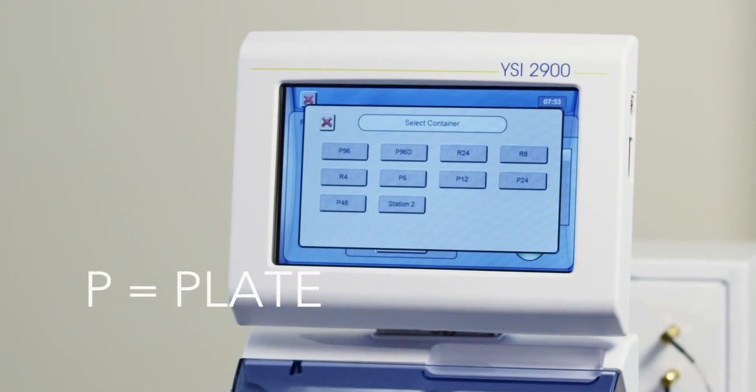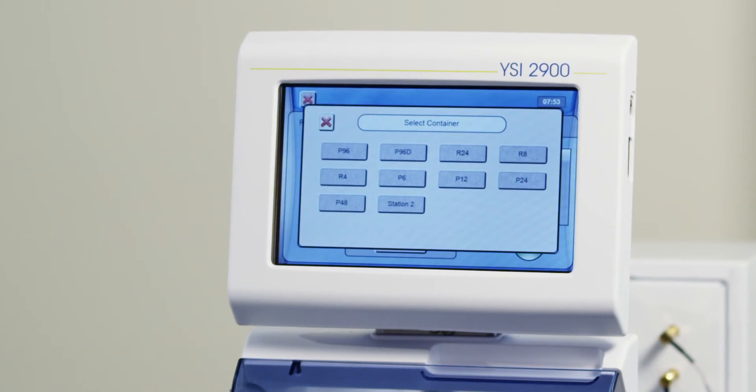P stands for Plate, and the number next to the P represents the number of wells in that plate. P96 is a 96-well plate. P96D is a deep-well 96-well plate. R stands for Rack, and the number next to the R is the number of tubes that rack can hold. Station 2 indicates that the sample will be presented manually to Station 2.